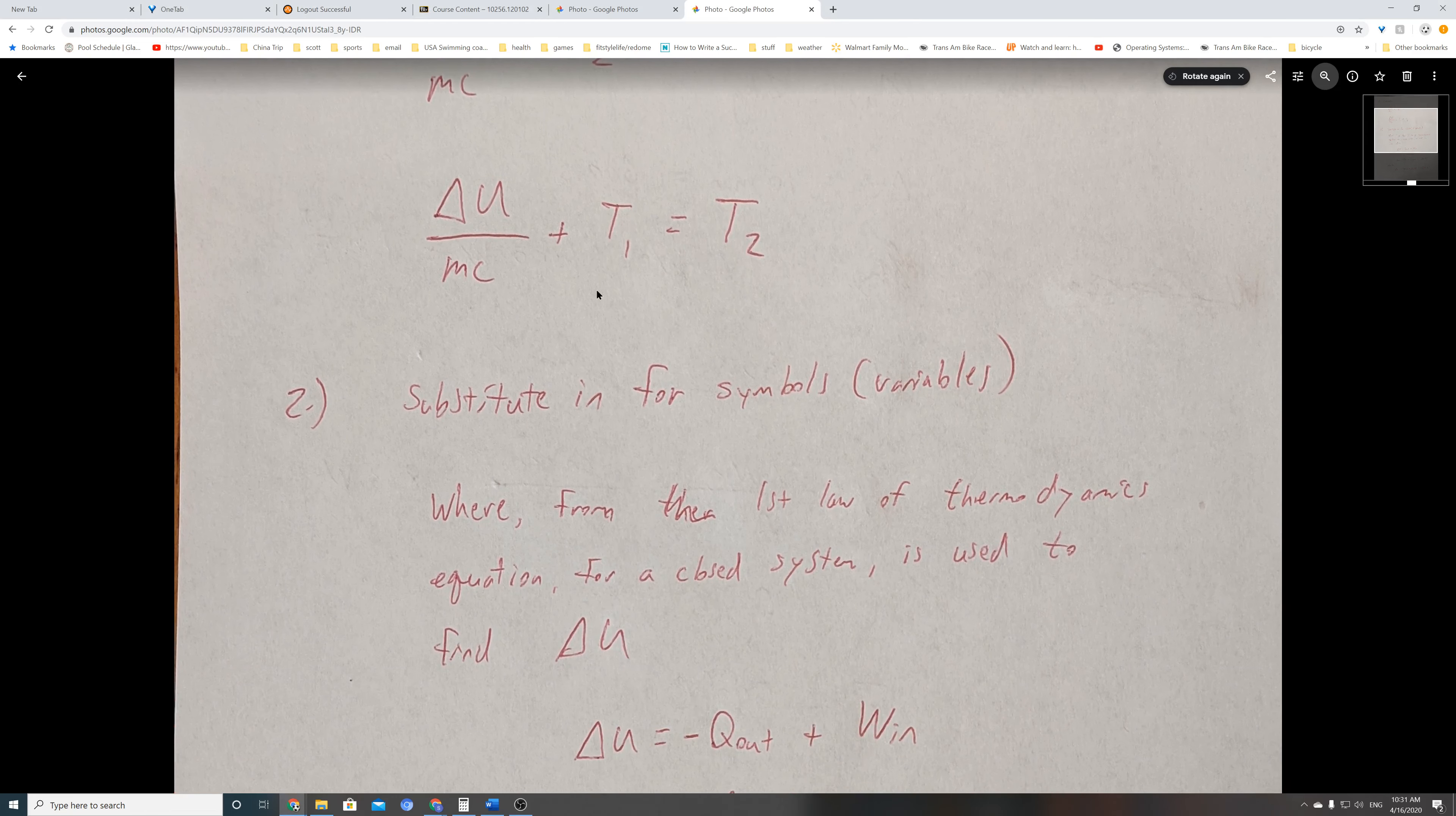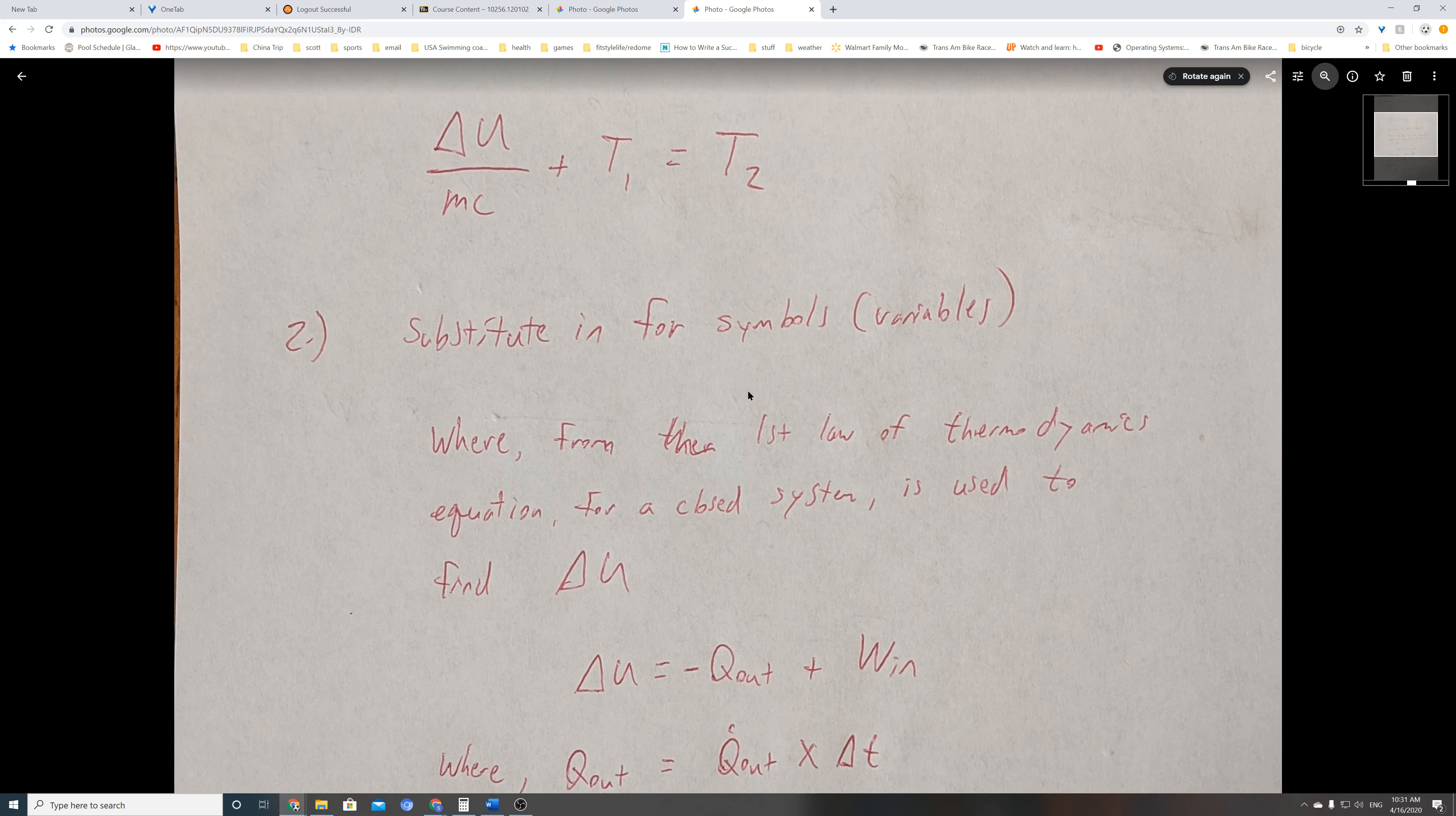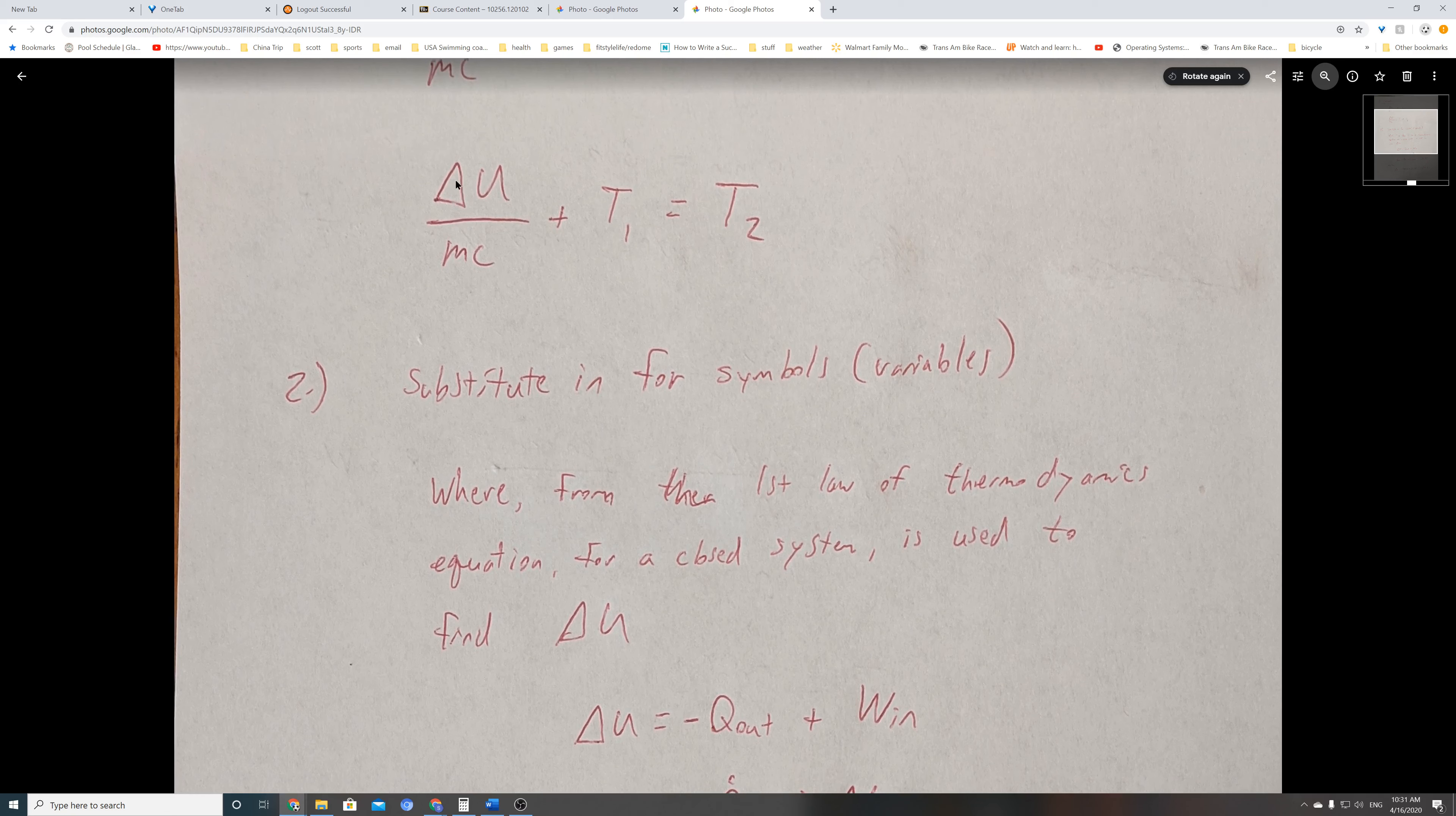The next step is to substitute in for these variables. We recognize right off the bat we weren't given Delta U, so we have to calculate that. We need to calculate Delta U first.